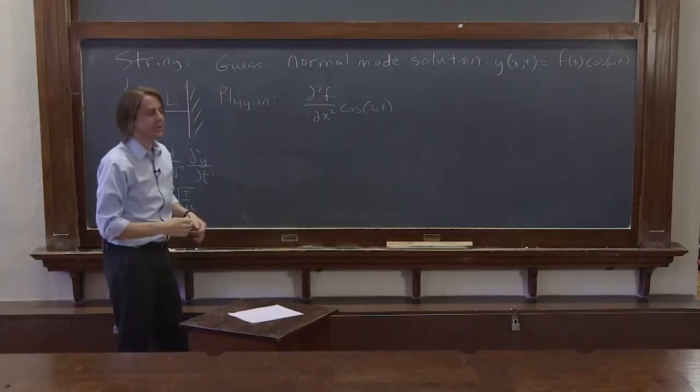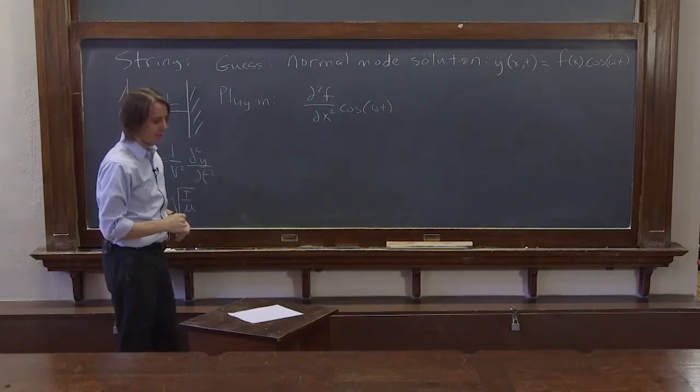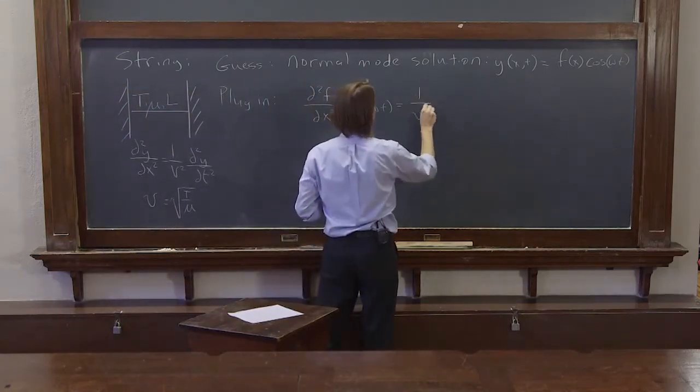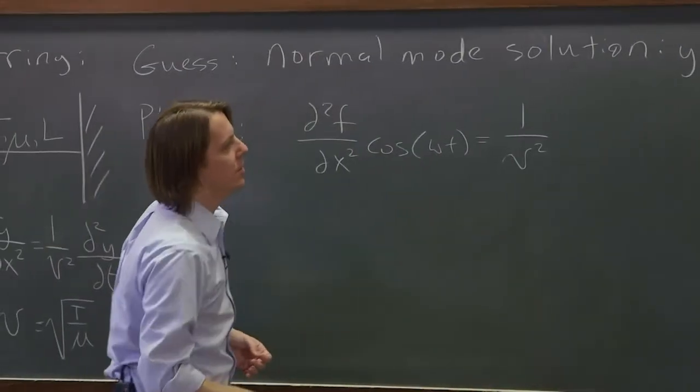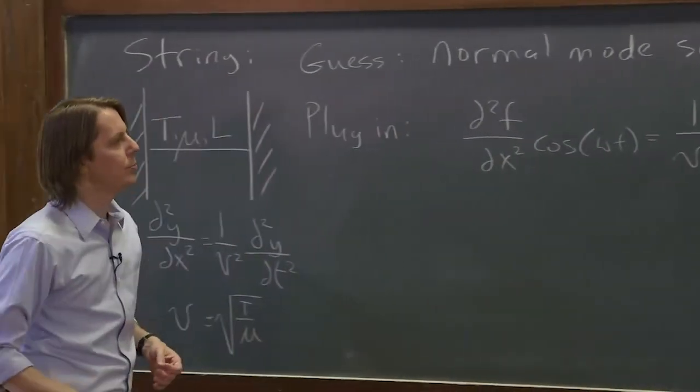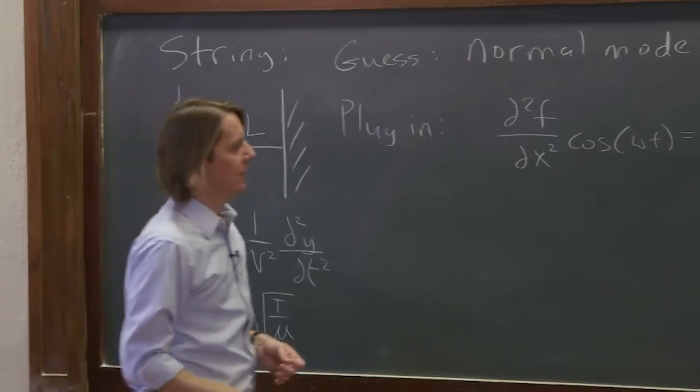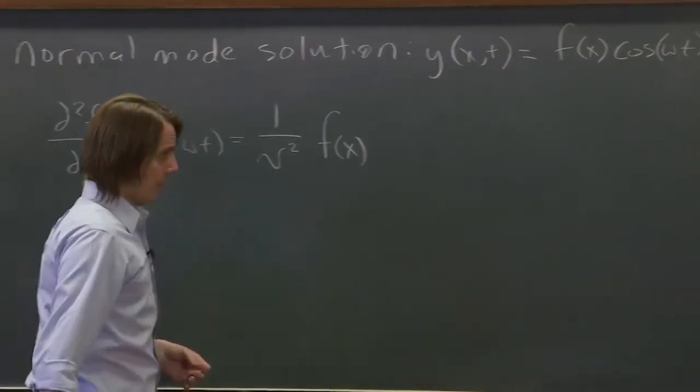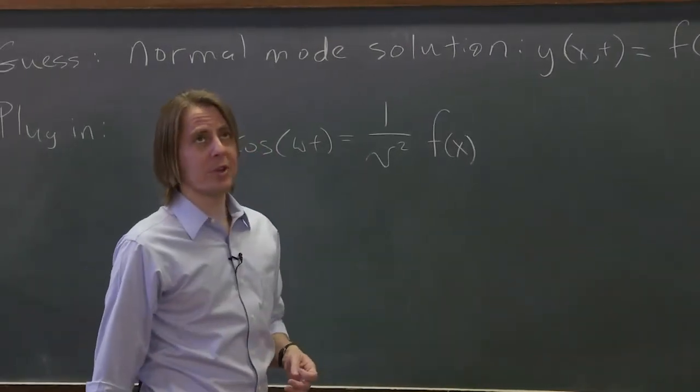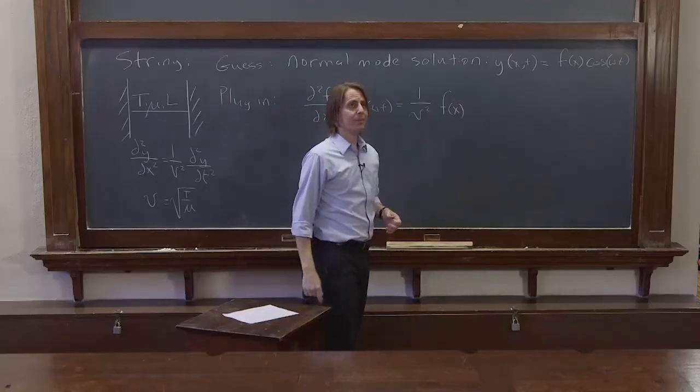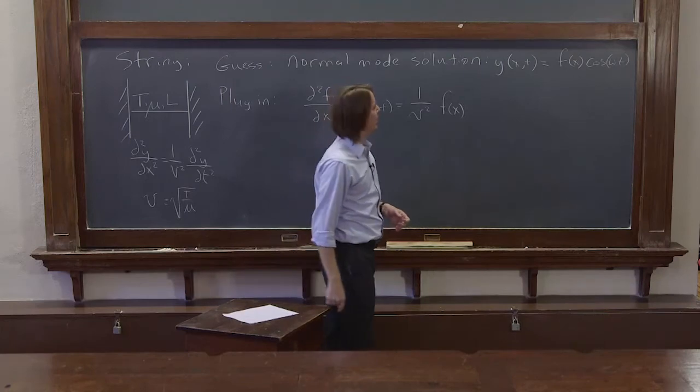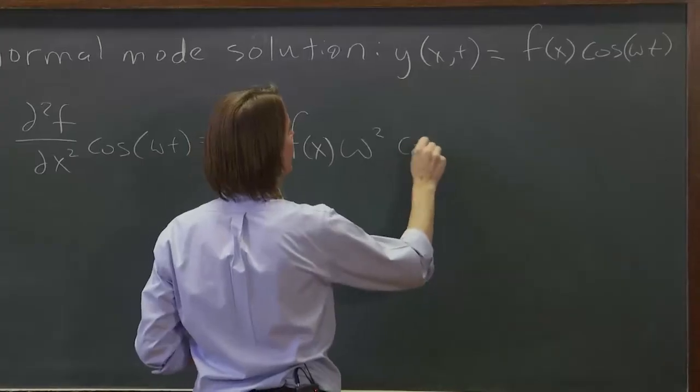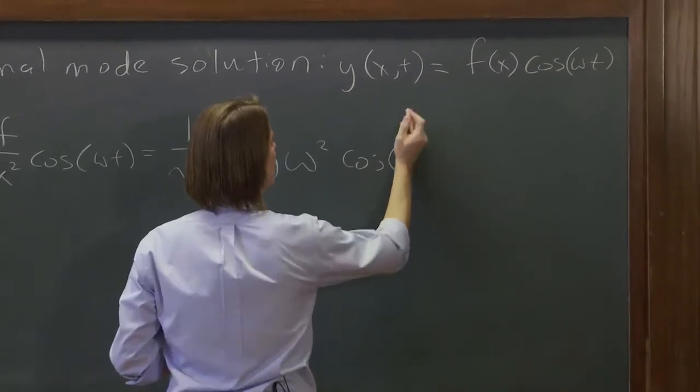We don't know f yet, so we can just say d2f/dx2. And that's going to equal 1 over v squared times two partials with respect to time. The f of x is just going to be along for the ride. Two derivatives of cosine gets you back to negative cosine, but it brings out two omegas. So we have omega squared and then cosine omega t.